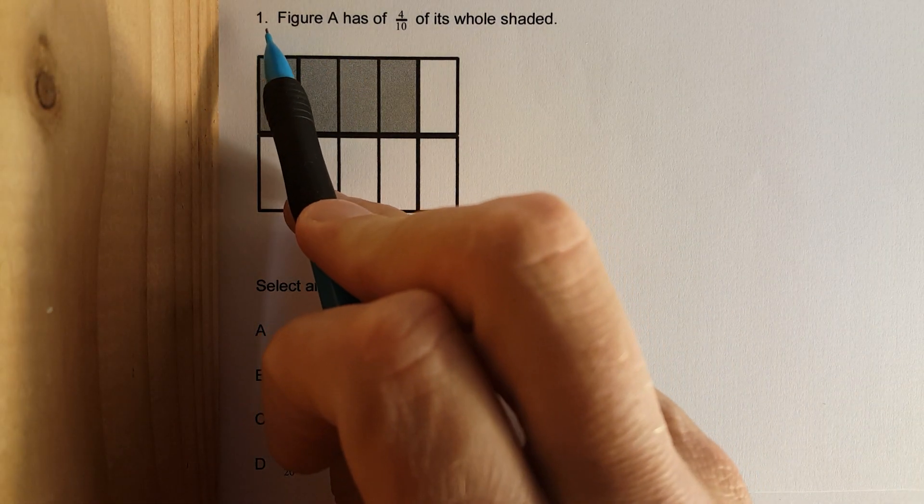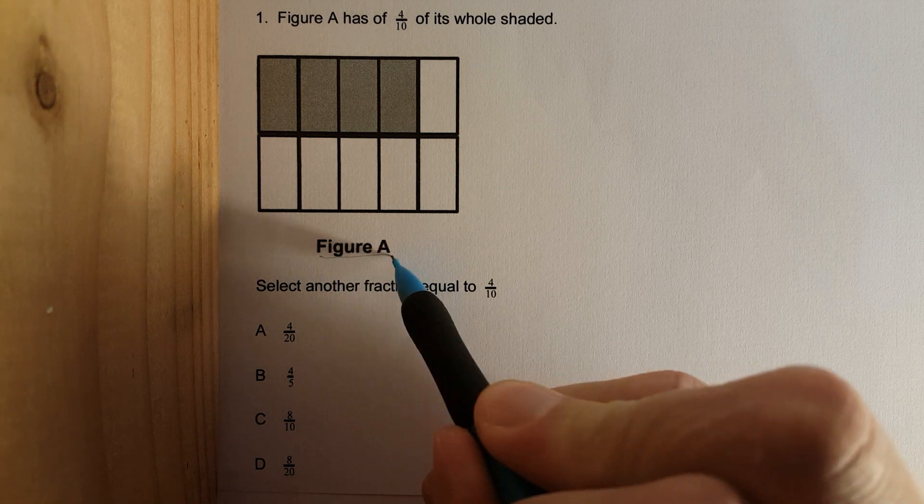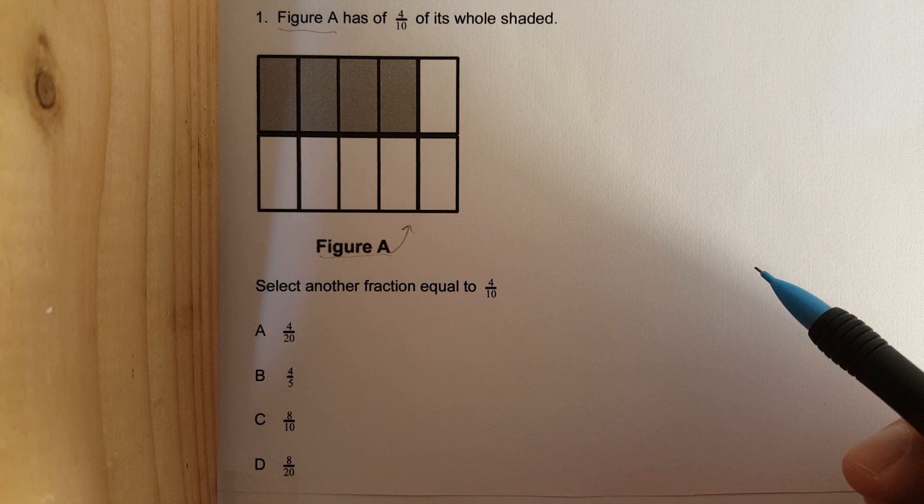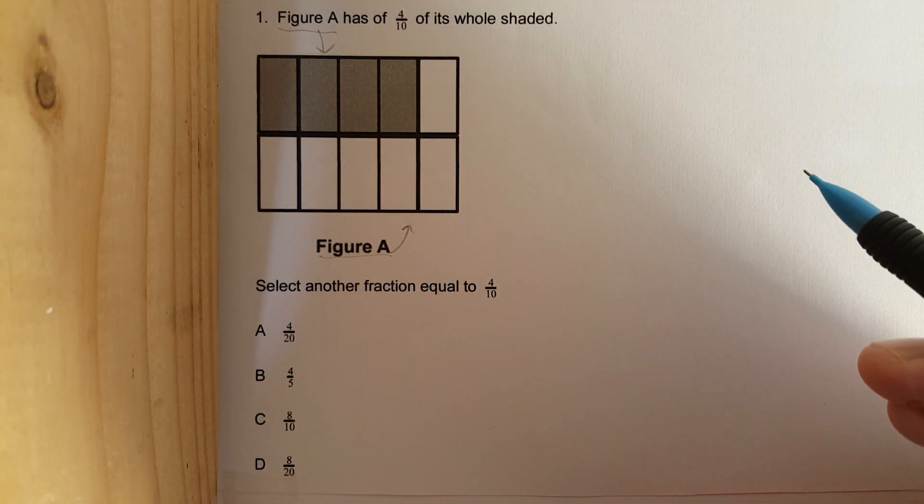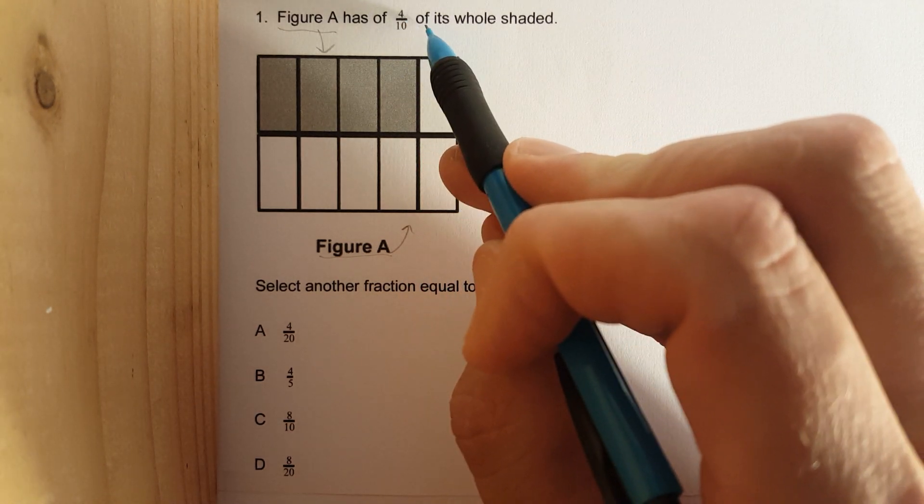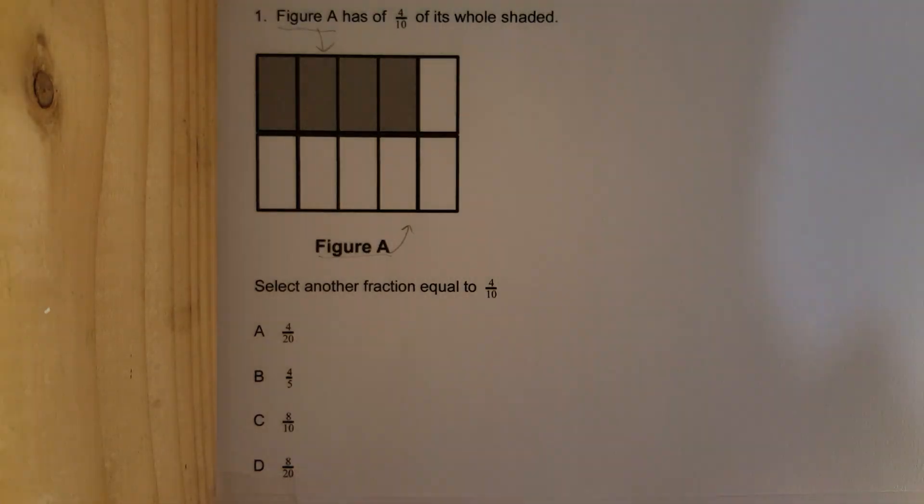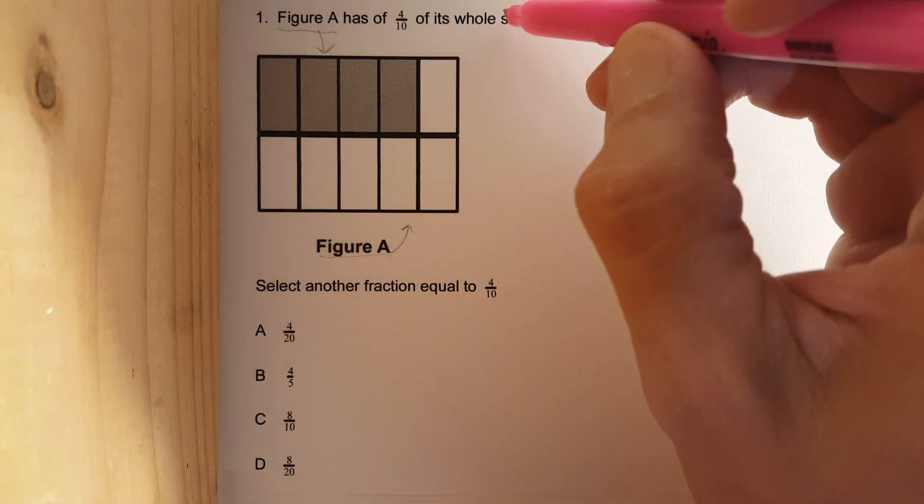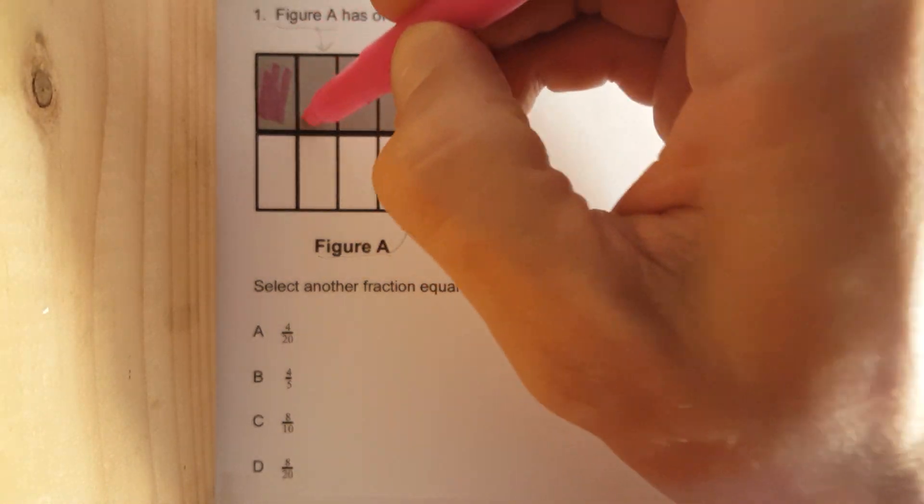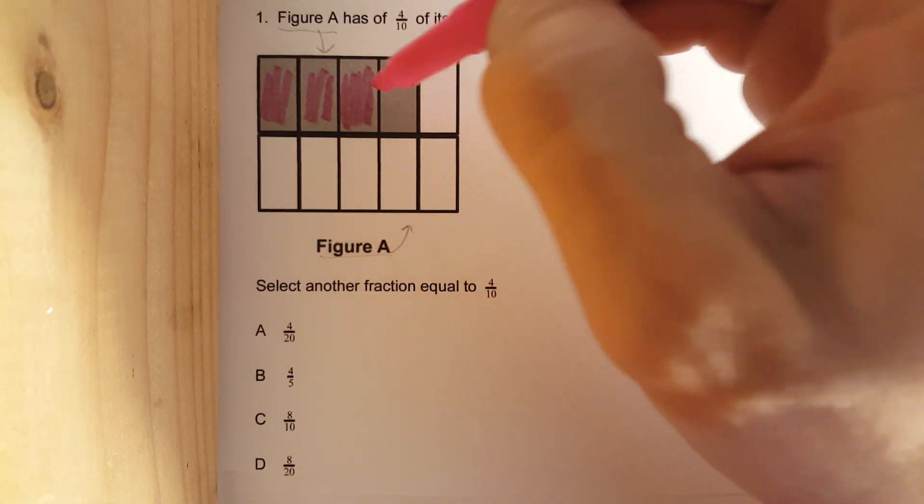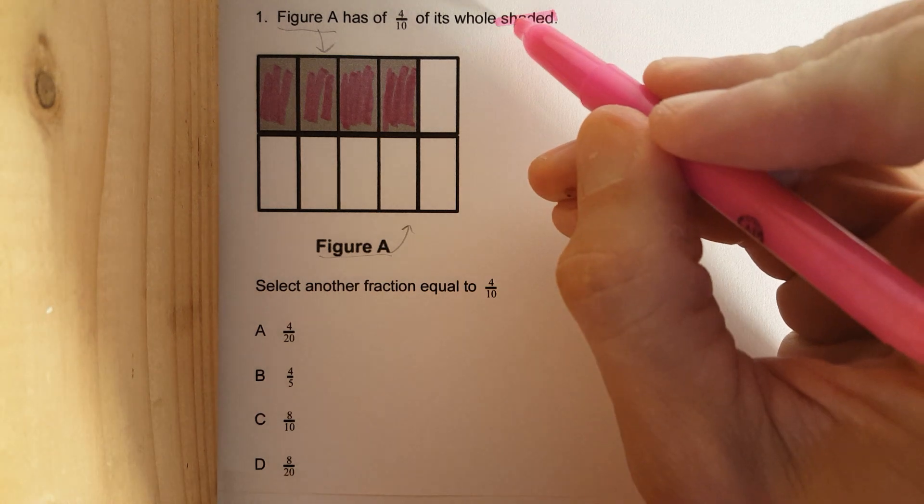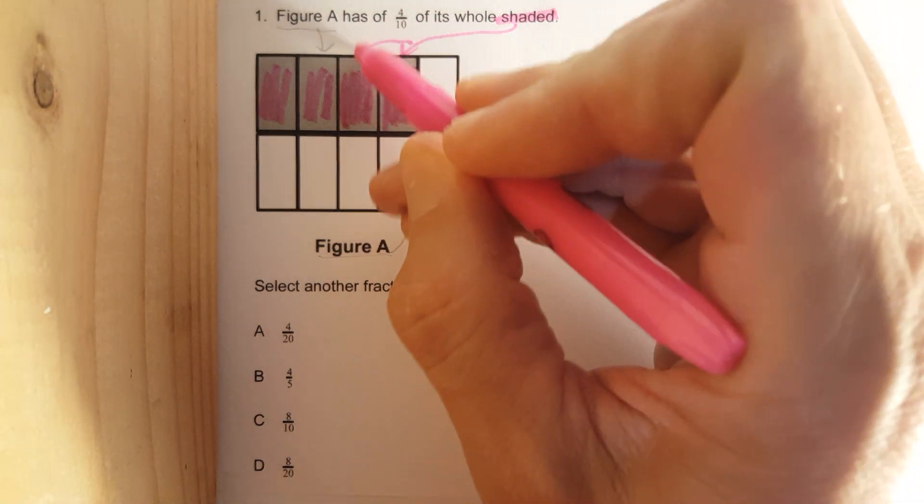Here we go. So, number 1. Figure A. This says Figure A. This is Figure A. All of it though. Has 4 tenths of its whole shaded. Keywords. Shaded. This is shaded. Now, I'm not doing it to the exact perimeter. Okay? But when you see the word shaded,